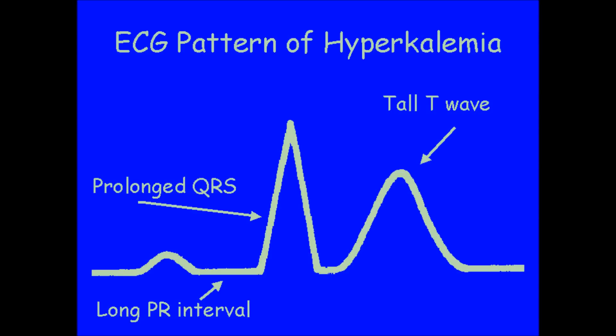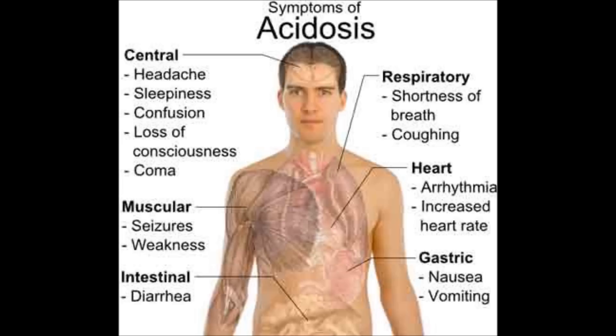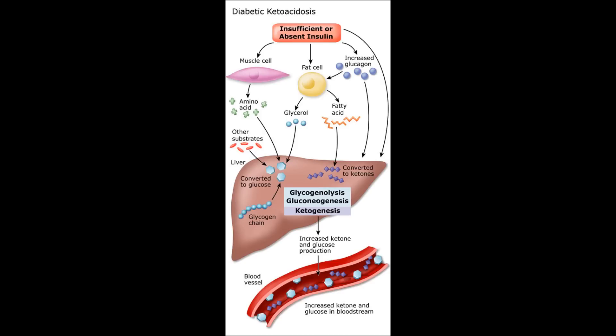Hyperkalemia is defined as potassium more than 5.0 milliequivalents per liter. The first cause of hyperkalemia is cellular shift — such as acidosis, hyperkalemia itself, and hyperglycemia.